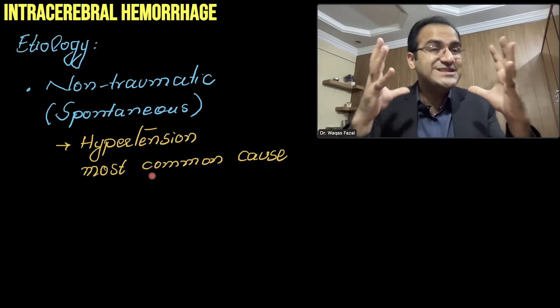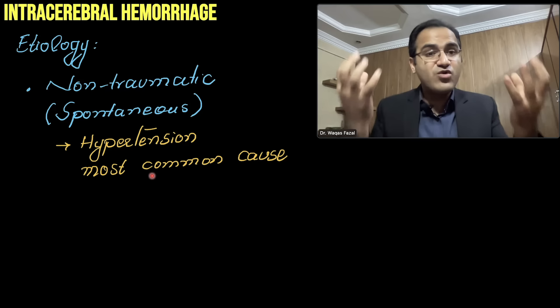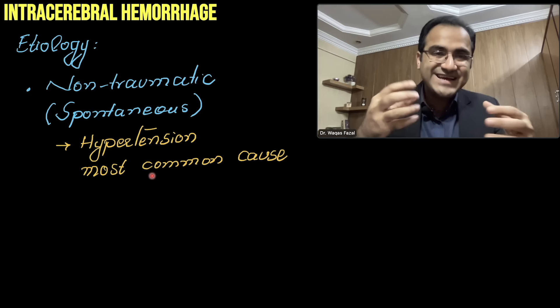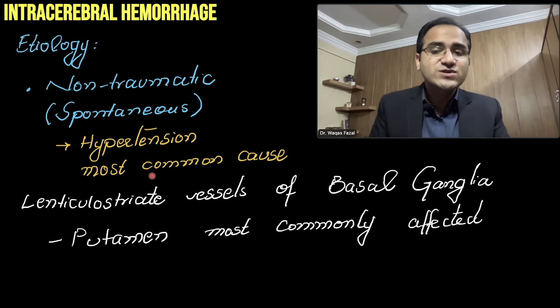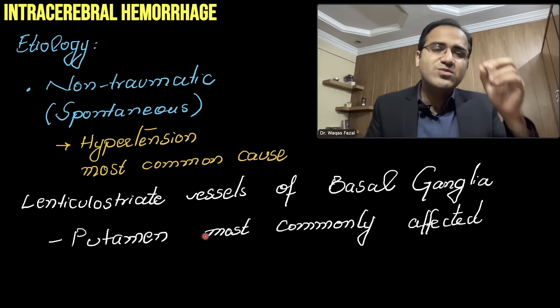Blood accumulates within the brain, and the pressure of blood on the brain produces focal neurological deficits. Those blood vessels supply parts of the brain like the basal ganglia and thalamus. When these inner parts do not receive blood supply, focal neurological deficits occur. The lenticulostriate vessels of the basal ganglia and putamen are most commonly affected.